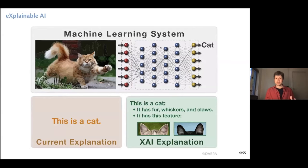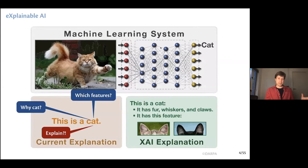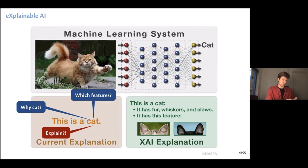Let's dive into details. We have these complicated machine learning models — trained, say, to distinguish animals. It can be a deep neural network or a boosted tree. Let's say it gives us a prediction that this image shows a cat. But as humans we would like to understand why the system says it's a cat — what features of this image, what exactly is responsible for this prediction. Maybe pixels, maybe some shapes in the image. In explainable AI, ideally, what we would like to get as an explanation is something like: that's a cat because it has some specific features of cats.